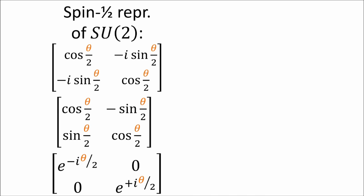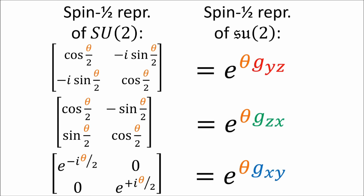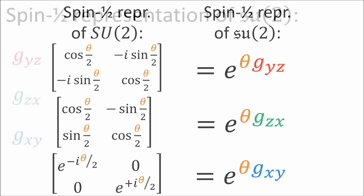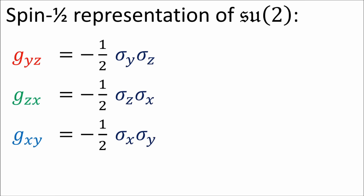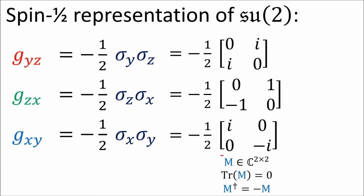We're also going to prove that the SO3 group only has odd-dimensional representations, or equivalently only integer spin representations. Before we learn the procedure for building general representations of SU2, we're going to spend some time studying the 2×2 or spin 1 half representation, starting with the spin 1 half representation of the SU2 Lie algebra. We know the three 2×2 generators for SU2 are given by negative 1 half times pairs of sigma matrices, giving a basis for 2×2 traceless anti-Hermitian matrices.